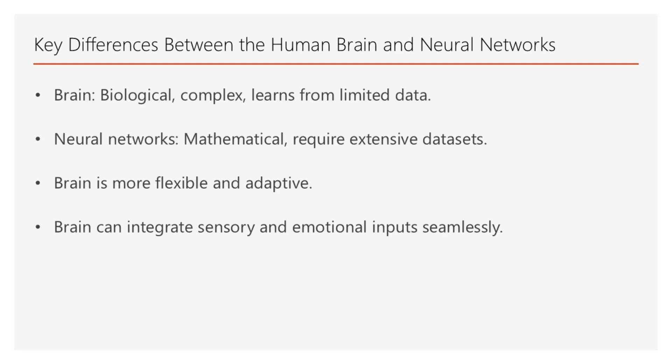First of all, the brain is vastly more complex, learns with limited data, and is biological. On the other hand, neural networks are mathematical and require extensive datasets for training. Additionally, the brain adapts dynamically in real time, even with partial information, whereas neural networks require retraining to adjust to new patterns. The brain's biological foundation allows it to integrate sensory and emotional inputs seamlessly, a capability neural networks currently lack.